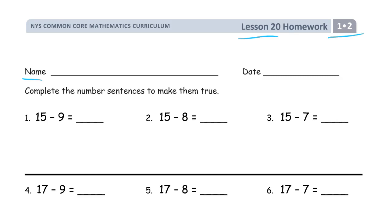Complete the number sentences to make them true. It doesn't say how we have to do it. So when they're close I'm going to count them up, but otherwise I'm going to be taking from 10 to do most of these — things like minus 9, minus 8, minus 7.